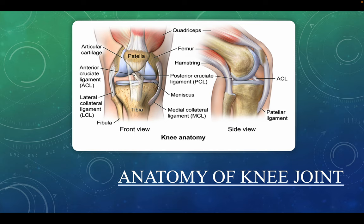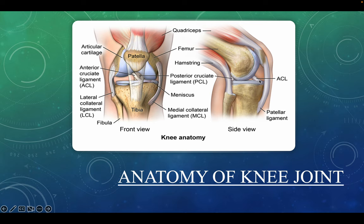You also have the menisci, located between the femur and tibia — you can see them just below the ACL on the diagram. They are basically C-shaped wedges that act as shock absorbers, cushioning the joint. The major ligaments of the knee include the ACL, PCL, lateral collateral ligament, and medial collateral ligament. These hold the femur and tibia together and provide stability.